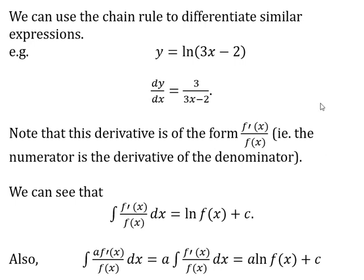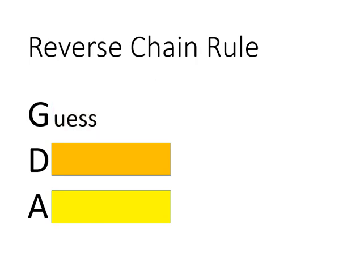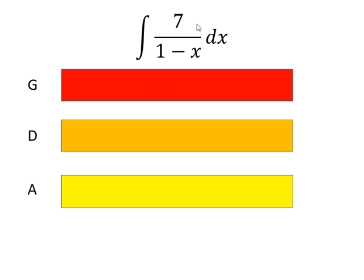We're always looking out for rational functions where the numerator is the derivative of the denominator, or a multiple of the derivative of the denominator. We're going to start using the GDA method — guess, differentiate, adjust — and then I'll show you a slightly different way to set these out. Both methods are absolutely fine. In this example, the denominator f(x) is (1 − x); if we differentiate the denominator we get negative one, and at the top we have 7, which is definitely a multiple of that derivative.